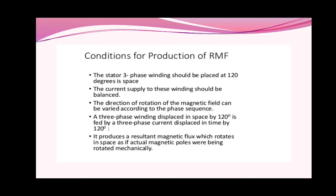Next we will see the conditions for production of rotating magnetic field. The three-phase winding should be placed at 120 degrees in space. The current supply to these windings should be balanced. The direction of rotation of magnetic field can be varied according to the phase sequence. The three-phase winding disposed in space by 120 degrees is paired by three-phase current disposed in time by 120 degrees, and it produces a resultant magnetic flux which rotates in space as if actual magnetic poles were being rotated mechanically.